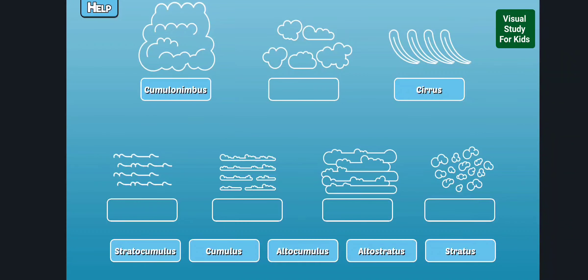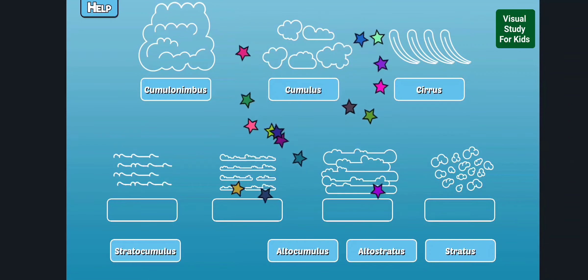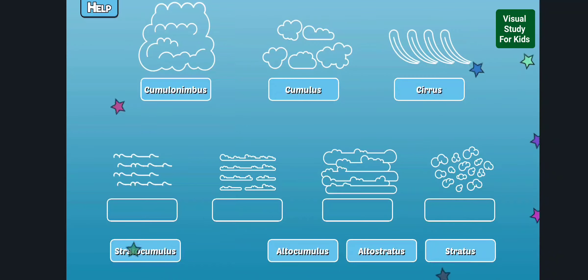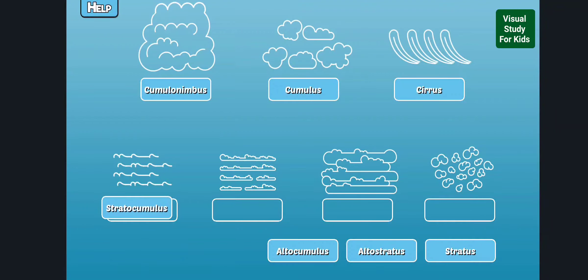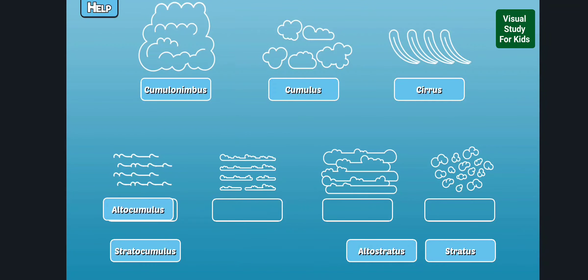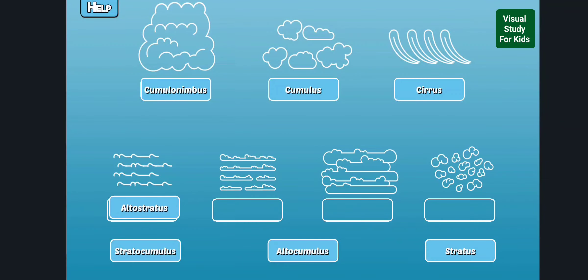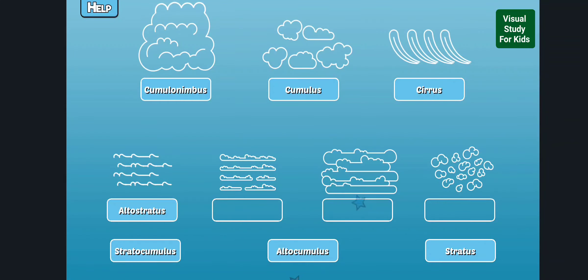Label the cloud types. Stratocumulus. Cumulus clouds are low to mid-level clouds. They're big, white, puffy, and usually mean good weather. Stratocumulus. Altocumulus. Altostratus clouds are medium-level clouds that form a dark gray covering and are a sign of rain.